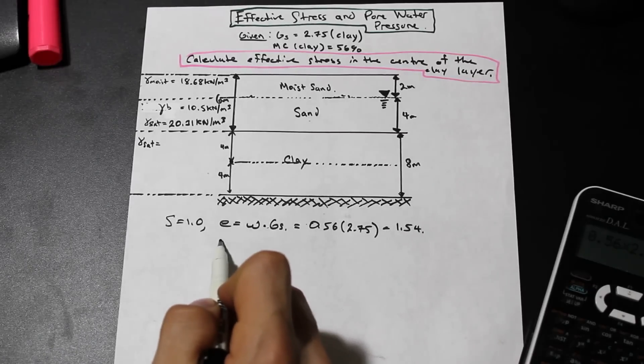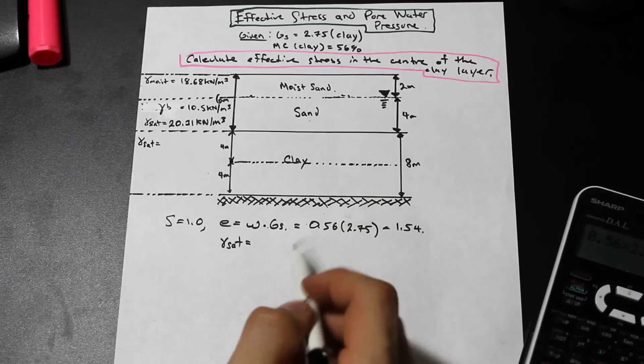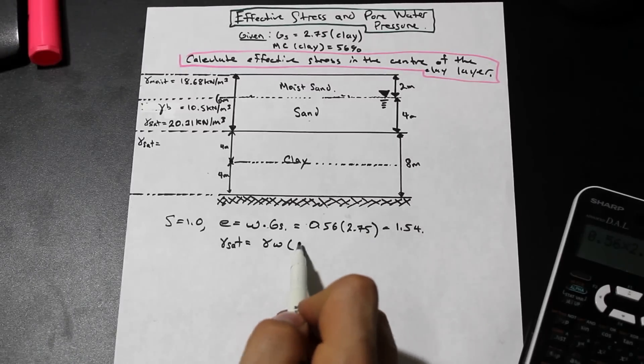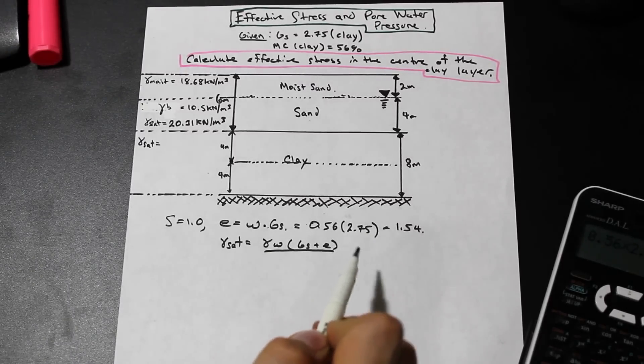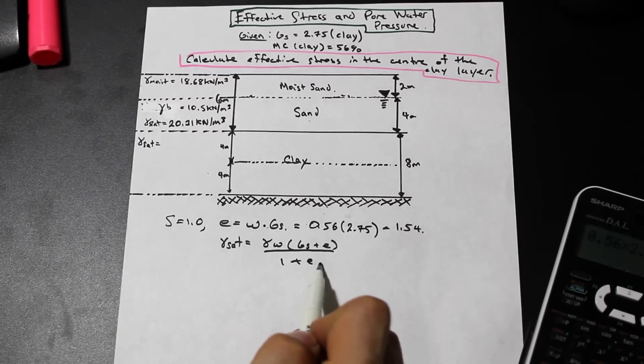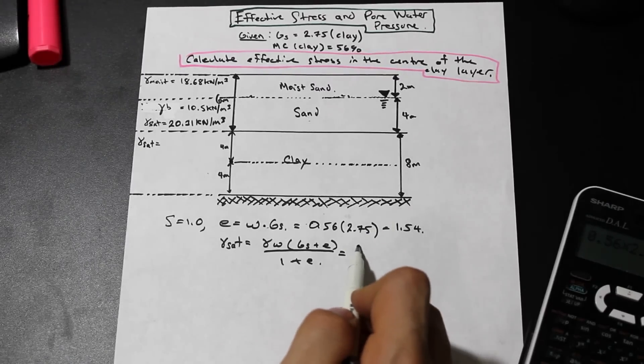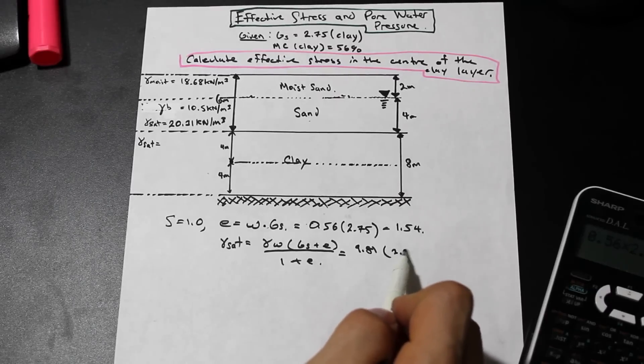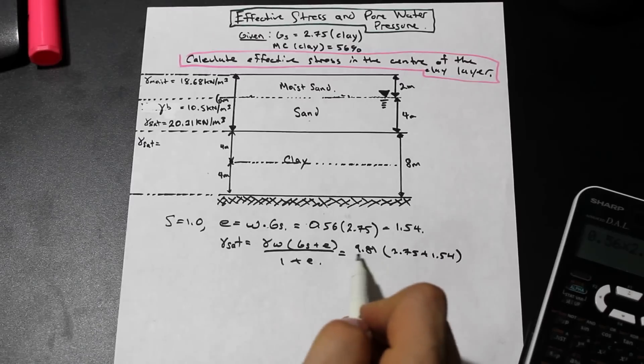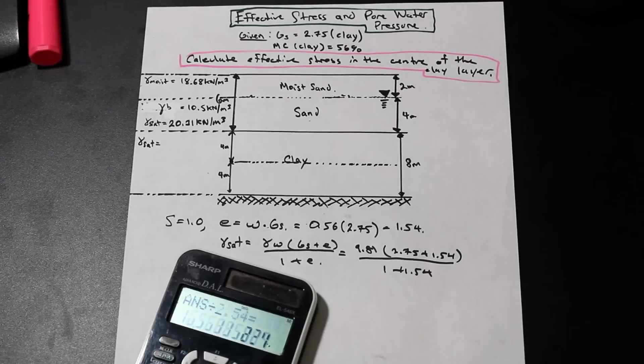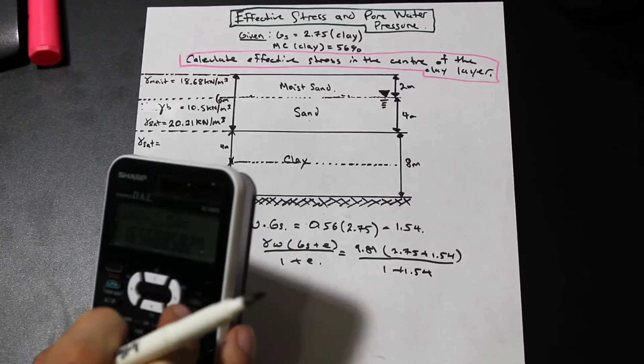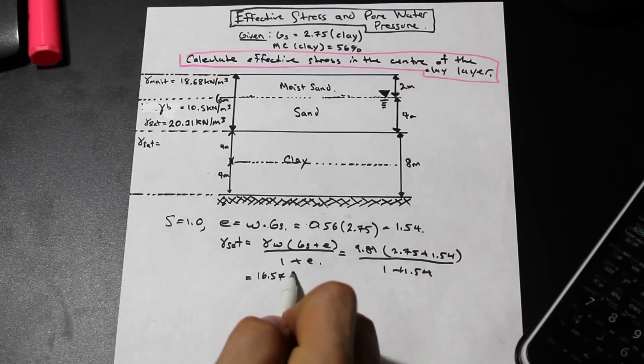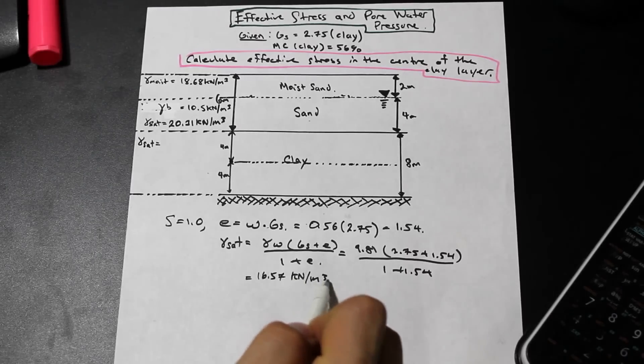And now we're going to use the formula for gamma saturated for clay here, for the clay stratum, and that formula is simply, and this comes back again to the little formulas that you're going to need to include in your cheat sheet or be familiar with, there's tons of little formulas like this in geotechnical engineering. So we know gamma water, 9.81. GS is 2.75 plus 1.54 divided by 1 plus 1.54. We're going to get 16.57 for gamma saturated for the clay.